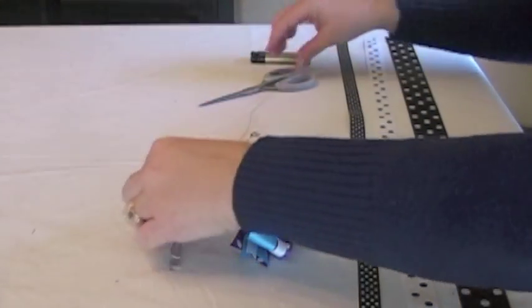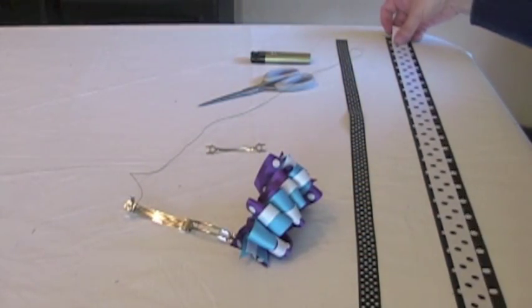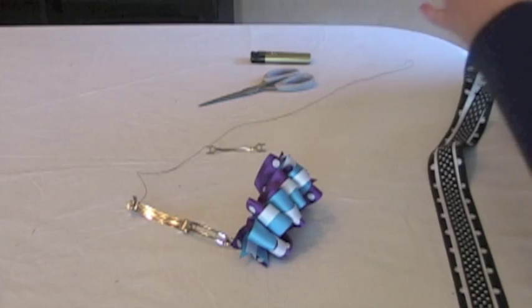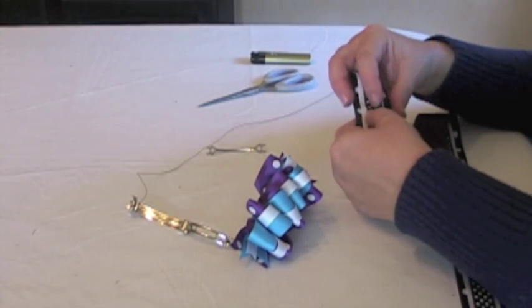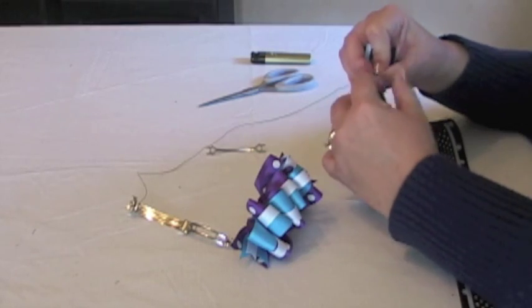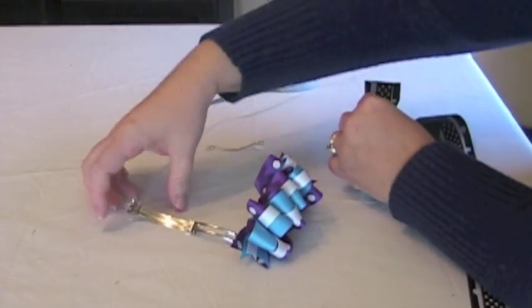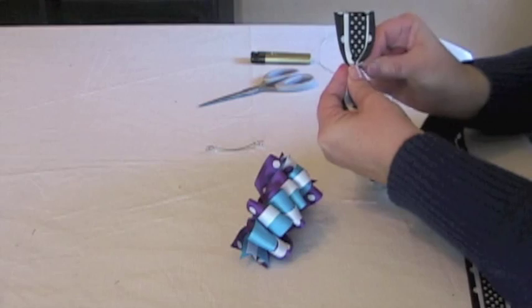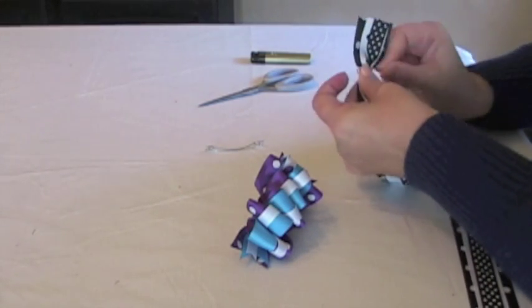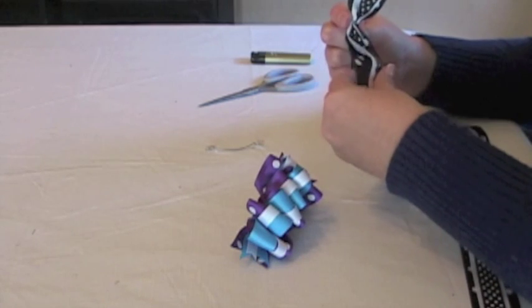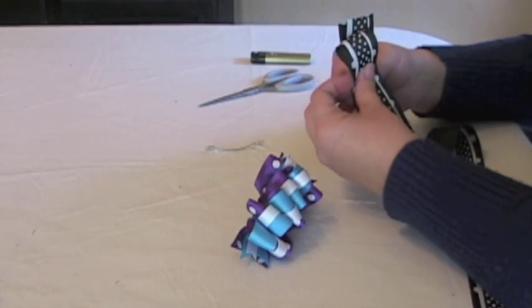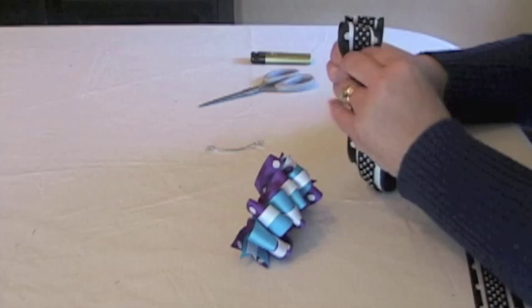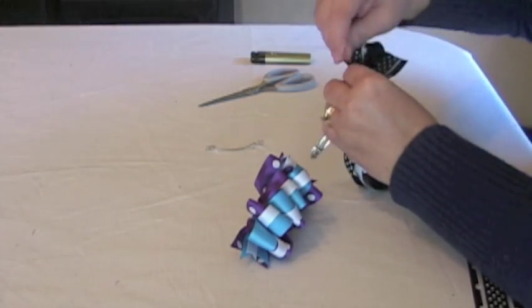Then you'll stack your ribbons, with the widest one on the bottom, and the skinniest one on top, and you'll pinch them up. On the outside of your barrette, you're just going to wrap that ribbon around a couple of times, and then take about 2 more inches of ribbon and wrap it up.